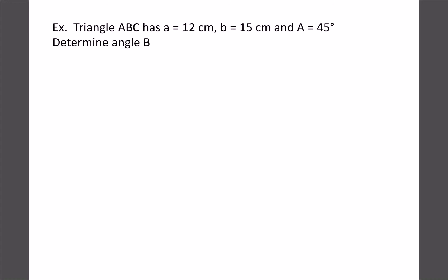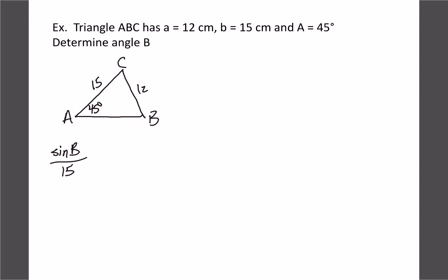Let's look at this example: angle A is 45°, side a is 12, and side b is 15. Drawing that triangle out gives us one possible scenario. Let's solve for angle B first. We'd have sine B over 15 equals sine 45 over 12. Cross-multiplying on the calculator: sine 45 times 15 divided by 12 gives us 0.88. We want angle B, so we do second sine, which gives us 62 degrees.